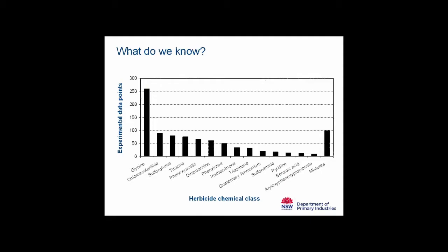This data from our initial review represents a large literature search to take in as much knowledge as we could, searching for the effect of herbicides on soil biology and function. It's a good check to see what herbicides are being focused on in the literature, and it's quite similar to the spectrum of herbicides being used around the world. The most data available is on the glycine group of herbicides, of which glyphosate is the main chemical, with more than twice as much interest in glyphosate than any other herbicide.